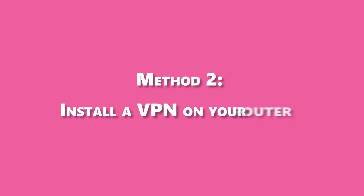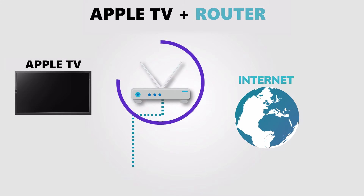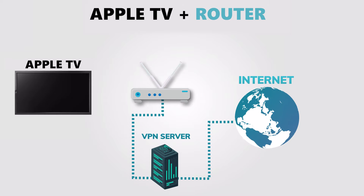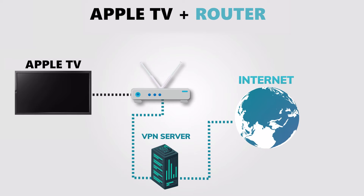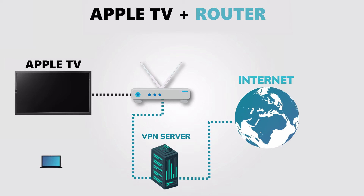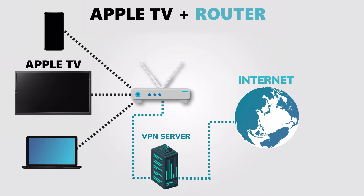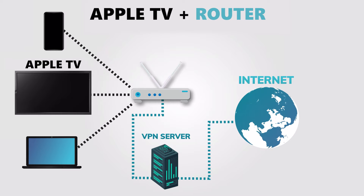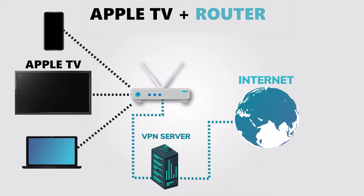Method 2: If your Apple TV doesn't have a VPN app, you can still use a VPN on your device by installing a VPN on your home router and connecting your Apple TV to that router. This will have the same effect as using the VPN app on your Apple TV, and it will also enable you to use a VPN on other devices connected to your home network. The problem with this method is that not every router supports a VPN, and not every VPN supports a router setup.